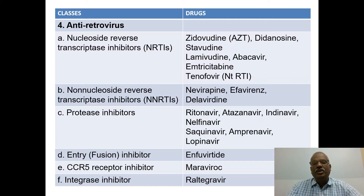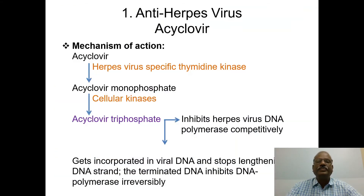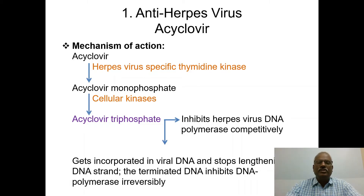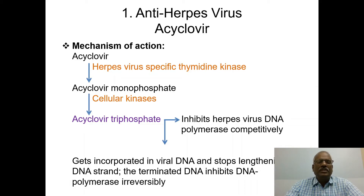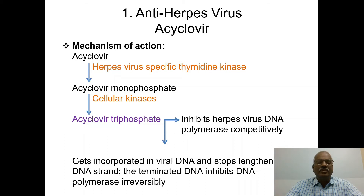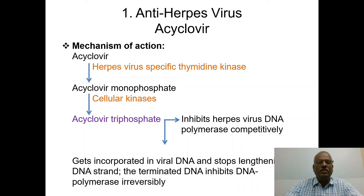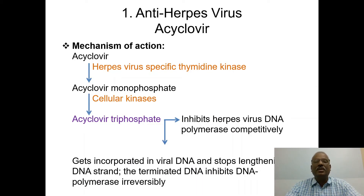Now we will discuss antiherpes virus drugs. Acyclovir is a prodrug which is converted into its monophosphate and then triphosphate form. Acyclovir is converted to acyclovir monophosphate by thymidine kinase, and then from monophosphate to triphosphate by cellular kinases.